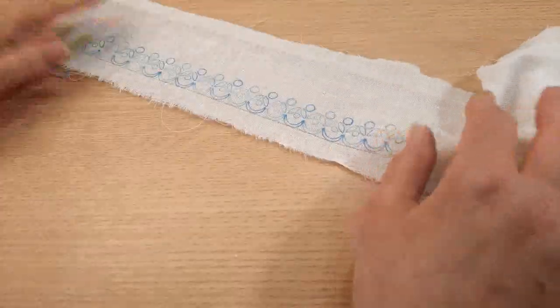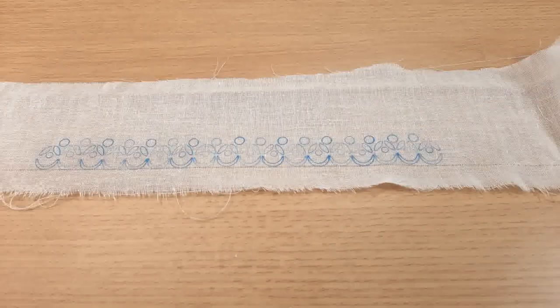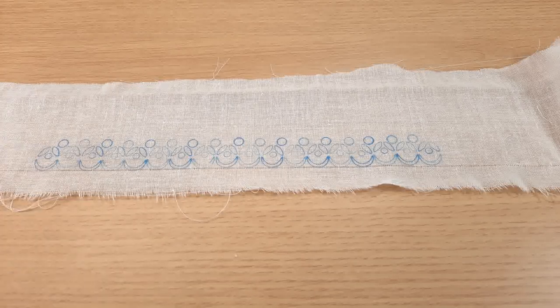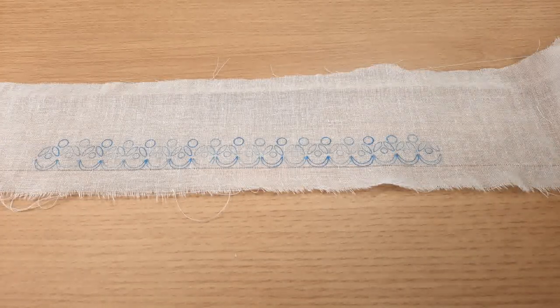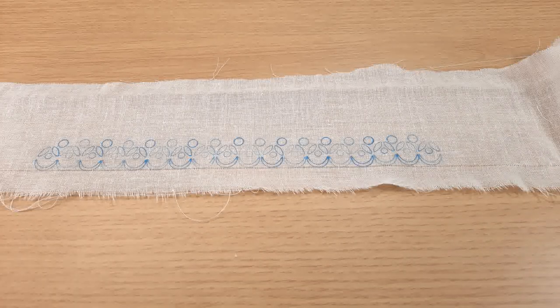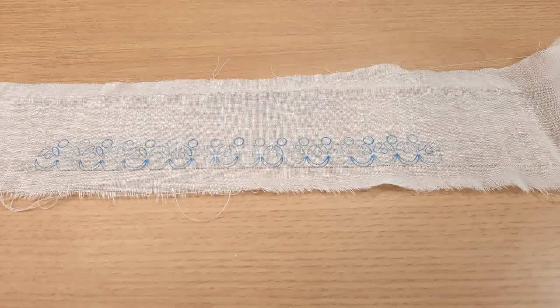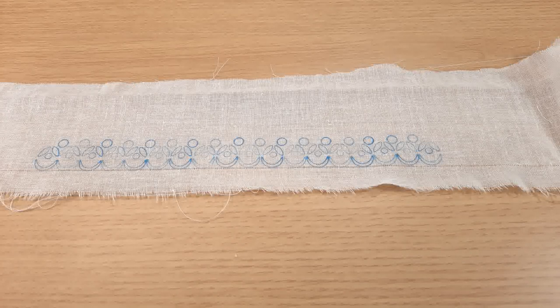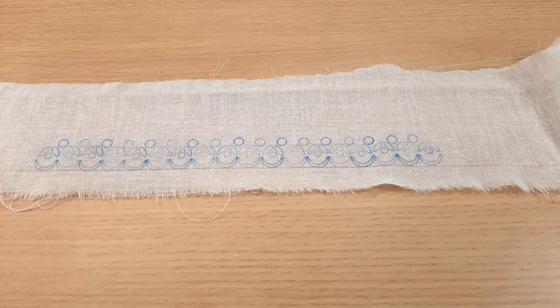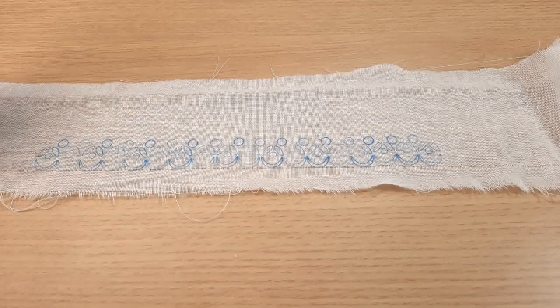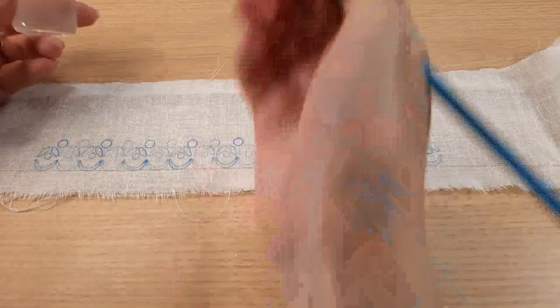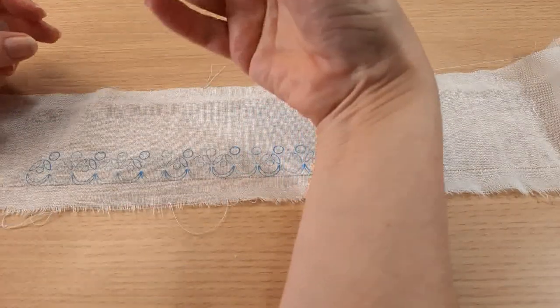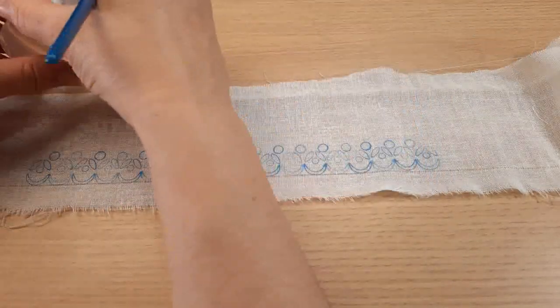Now what you can do if you want is you can put a little bit of starch onto the fabric. Now this is completely optional depends on what you want to actually do. I'm using some of our lace starch and a paintbrush except that my paintbrush has disappeared. There it is.